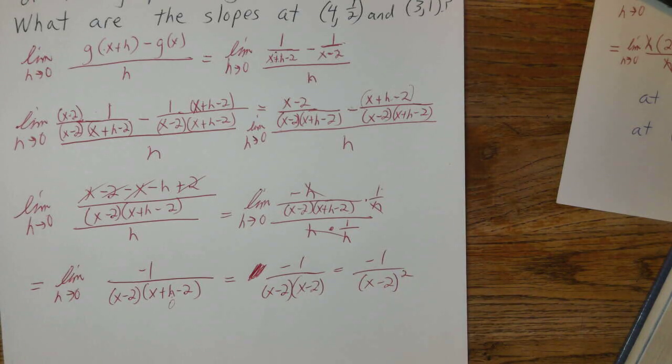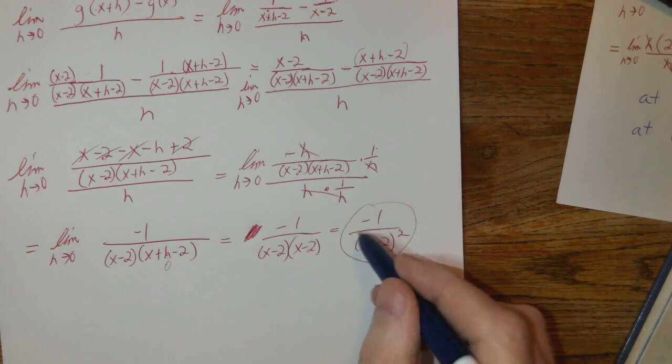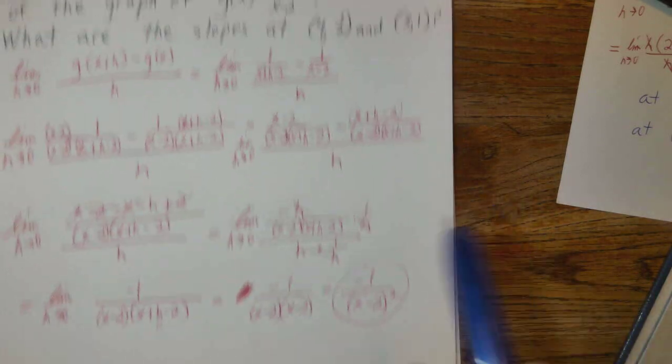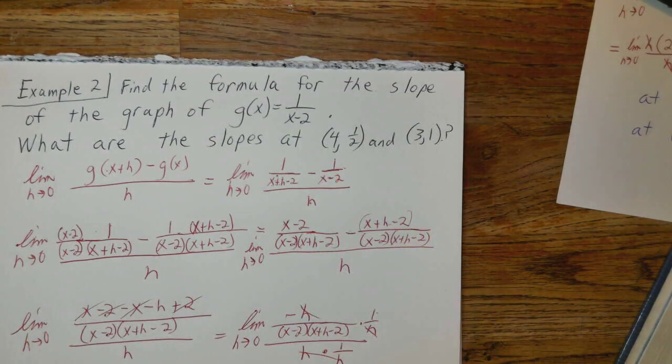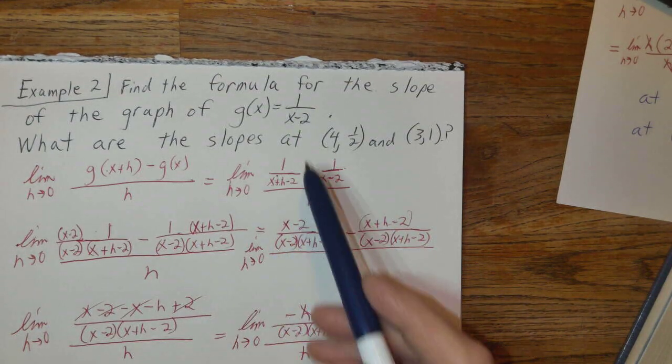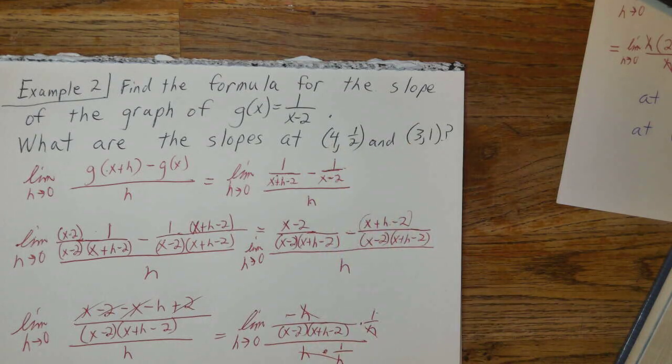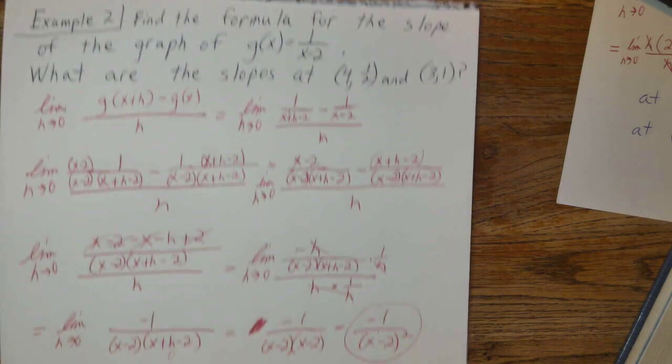That is the general form for the slope of this function. And it varies depending on what the value of x is. So the x is still a variable here.